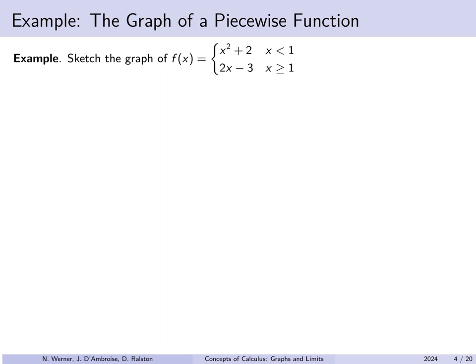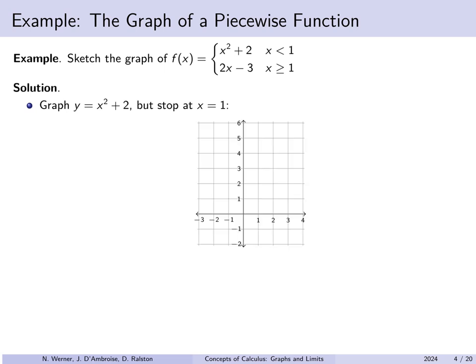So let's try to sketch a graph of this piecewise defined function. We're going to take the parabola y equals x squared plus 2, but we're only going to consider x values less than 1 — from the left, we're going to stop at x equals 1. The parabola y equals x squared plus 2 has vertex 0 comma 2, but we're only going to include the portion of this parabola up to x equals 1.